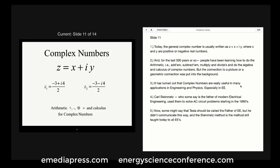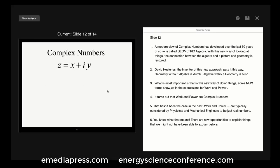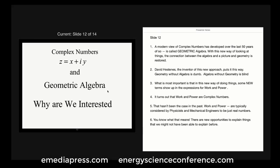It's turned out that complex numbers are really useful in many applications in engineering and physics, especially in electrical engineering. Carl Steinmetz, who some say is the father of modern electrical engineering, used them to solve AC circuit problems starting in the 1890s. Some say Tesla should be called the father of electrical engineering, but he didn't communicate this way, and the Steinmetz method is the method still taught today to all electrical engineers.